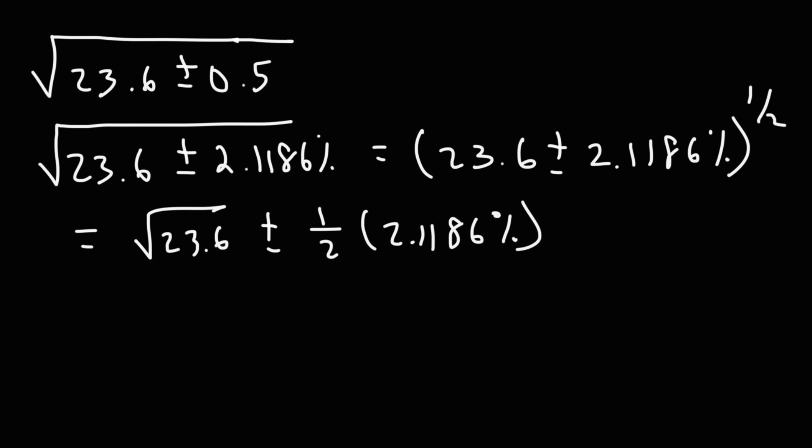The square root of 23.6 is 4.85798, so we could say 4.858. Now half of 2.1186 is 1.0593%. Now let's convert the percent uncertainty into an absolute uncertainty value. So we're going to multiply 4.858 by 1.0593 and then divide that by 100. This is now 0.05146.